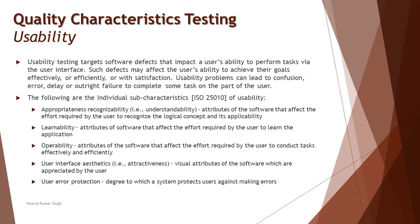Operability is an attribute that affects the effort required by the user to conduct tasks effectively and efficiently. For example, you may understand how ATM software works and have learned the steps to withdraw money, but can you actually perform that action efficiently without mistakes? Error messages, information messages, and warning messages help you perform tasks more efficiently — they prevent errors or guide you to overcome them and continue the process. Operability is about performing tasks more efficiently by reducing anomalies.